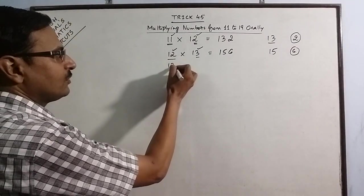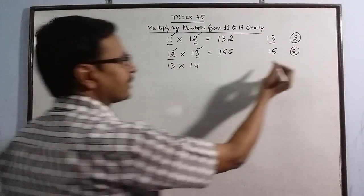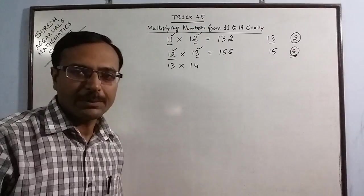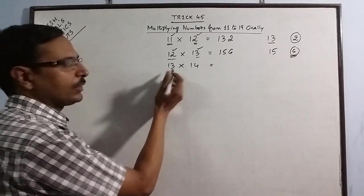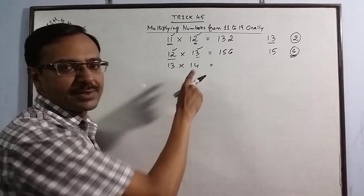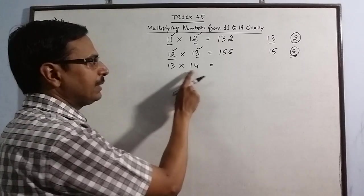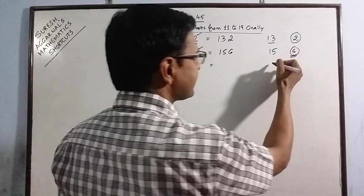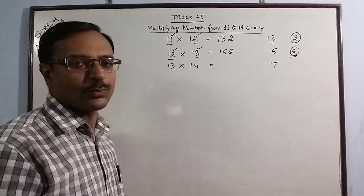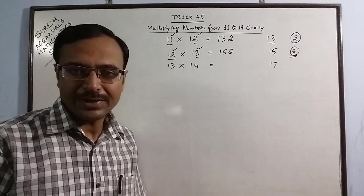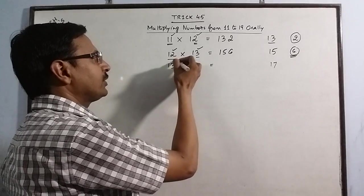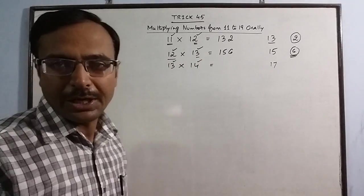Now let us take one example in which this product will be a two digit number. Here we can have 13 plus 4 is 17 or 14 plus 3 is 17. So first step is the same. Now the product of the units places 3 and 4, 3 into 4 is 12.